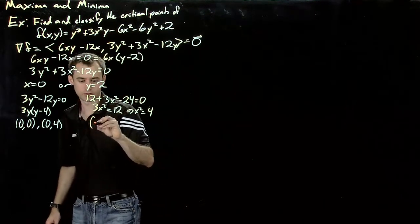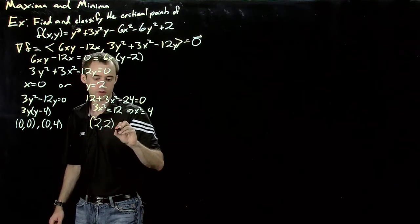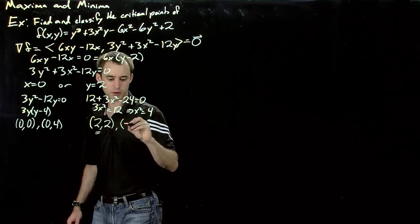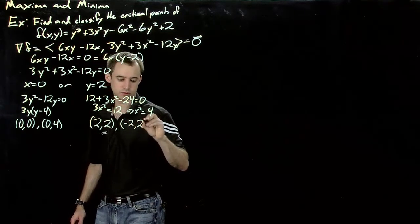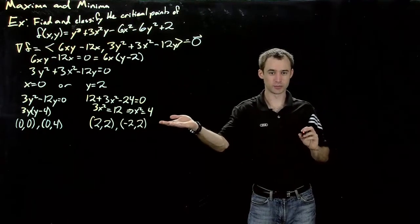Which means our x has to be either plus or minus 2, giving us the values 2, 2 and minus 2, 2. So these are our four candidate critical points.